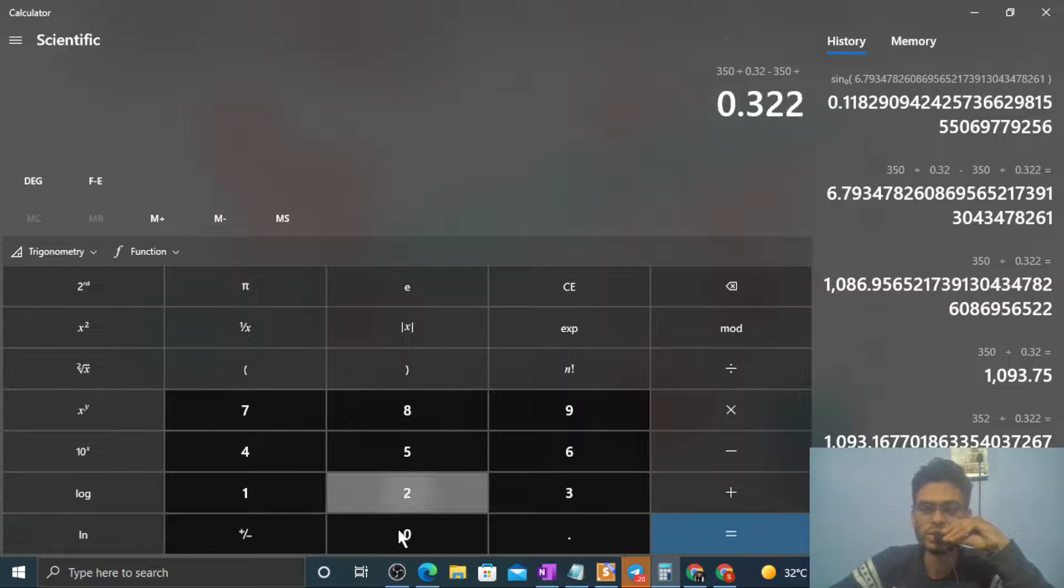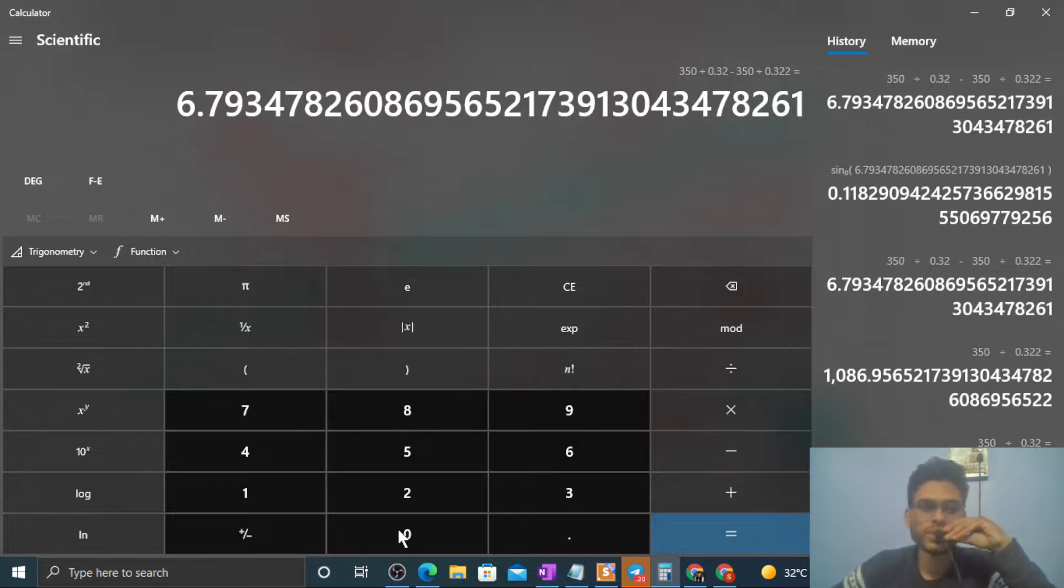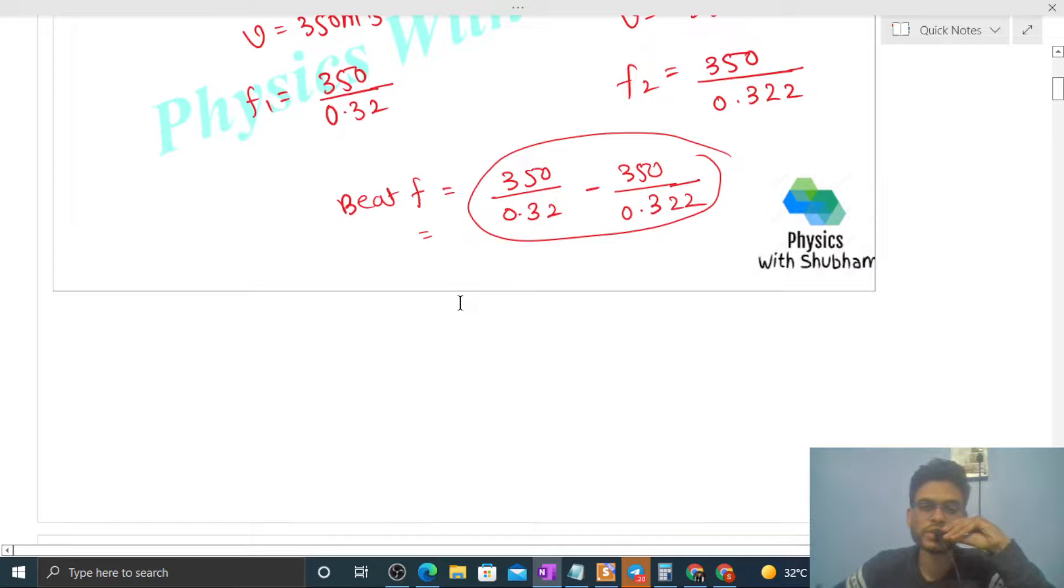So 6.79... so what will it be? If we talk about integer, so almost equal to 7. You can round off - 7 will be the answer.